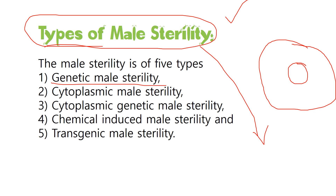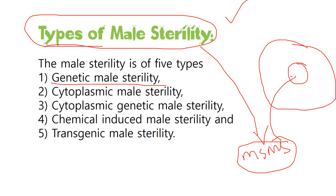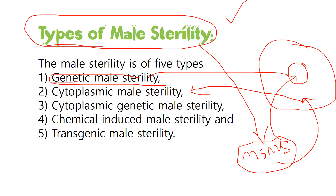The male sterility recessive gene allele is denoted as ms ms. When this recessive allele is present inside the nucleus, the sterility is termed genetic male sterility. Whereas if the recessive gene is present extra-nuclearly — that is, outside the nucleus in the cytoplasm — it is called cytoplasmic male sterility. These are the two most important sterility phenomena used in plant breeding.